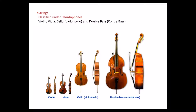Finally, we have the strings, classified under chordophones. Some examples are violin, viola, cello or violoncello, and the double bass or contrabass. This is how the violin sounds like, then the viola, cello, and finally the double bass.